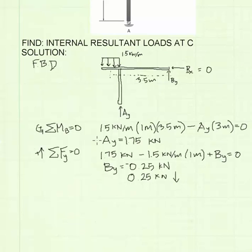Now I'm ready to find the internal resultant loads at C, which is the point of this problem. To do that, we need to make a theoretical cut in the structure at point C. The next step is to draw a free body diagram of the cut structure.